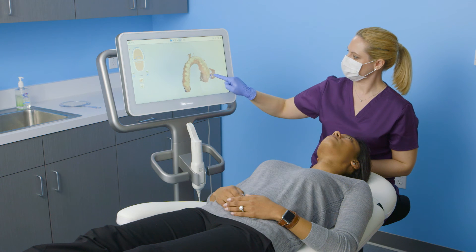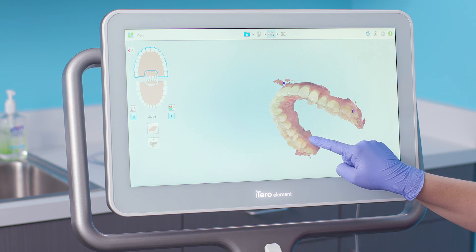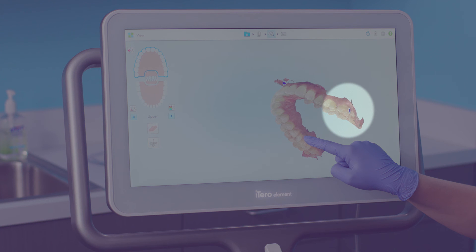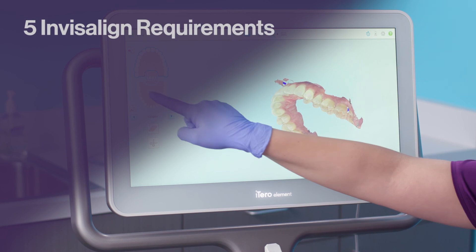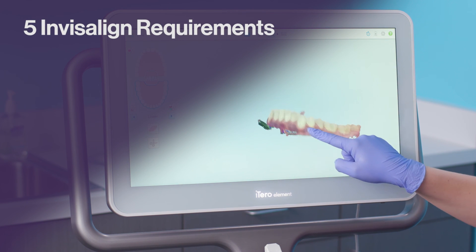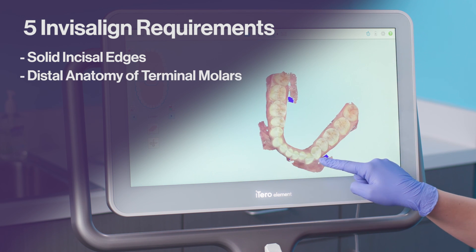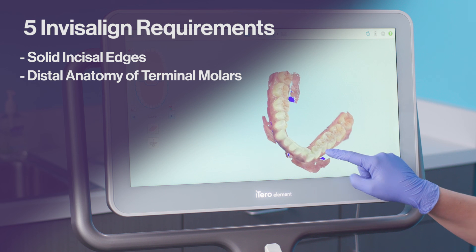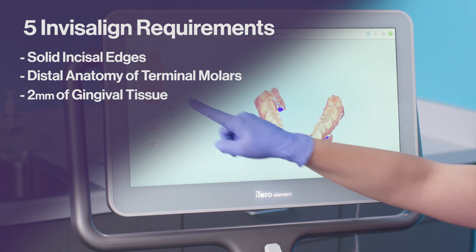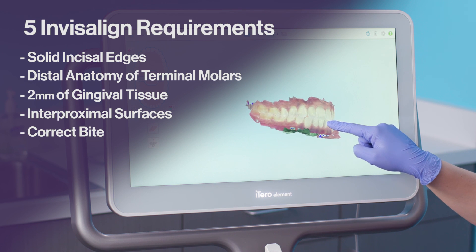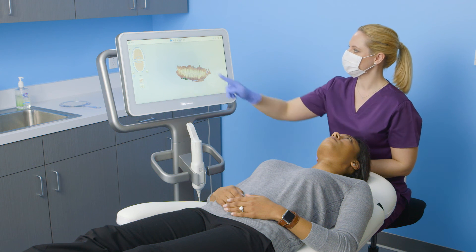If this is an Invisalign scan, I'll confirm that I have filled in any areas of missing anatomy. This will be indicated in red when I'm in monochrome mode, and purple when I'm in color mode. I will also confirm that the scans contain the five Invisalign requirements: solid incisal edges, the distal anatomy of the terminal molars, 2 mm of gingival tissue, the inner proximal surfaces, and the correct bite. When I'm satisfied with the digital model, I will send the case.